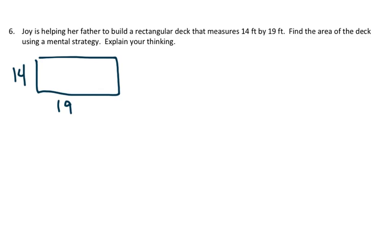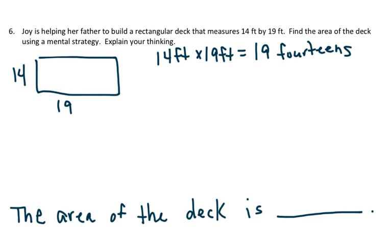And to find the area, I need to multiply 14 feet times 19 feet. And it's going to be the same as 19, 14s. So this is really similar to the problems that we've already seen. So I'm going to write my target sentence on the bottom here. My target sentence. The area of the deck is blank. And I actually am going to write the unit because I know that it's going to be in feet.